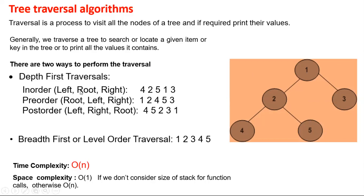For example, in in-order (left, root, right), we have to do that recursively. We go left to node two, then recursively apply left to node two, left to four, then root two, then five. Back to one as root, then right to three. On pre-order (root, left, right): one, two, four, five, three. And on post-order (left, right, root): four, five, two, three, one.